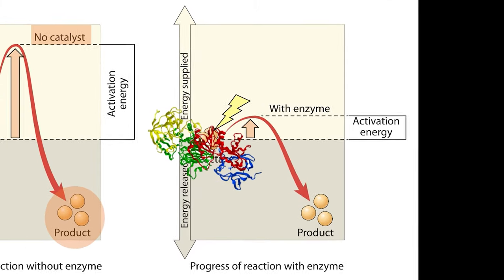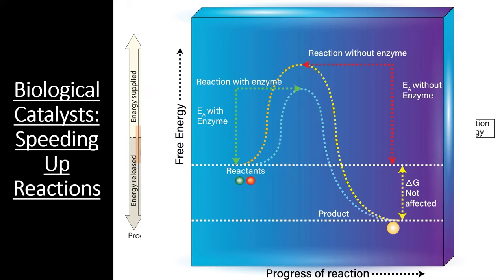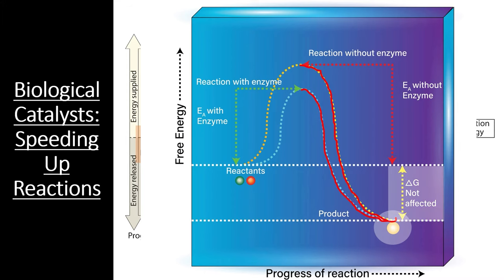Enzymes are considered a catalyst and not a reactant for a couple of reasons. First, if we look at the product of a reaction, we can see that there is no difference in free energy between an enzyme-catalyzed reaction and a reaction that takes place without an enzyme. In other words, the product ends up with the same amount of energy with both methods. The change in Gibbs free energy, denoted delta G, is the same in both reactions. This means that the same amount of energy was released in the overall reaction, showing us that the enzyme did not donate matter or energy to the reactants or products. It simply lowered the amount of energy the reactants needed to get started.